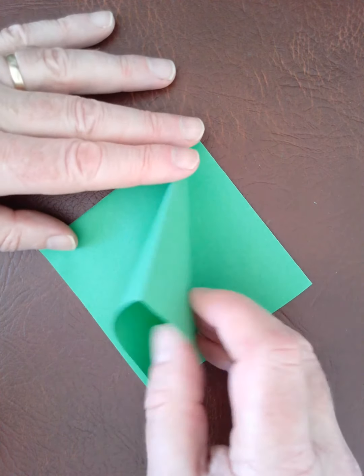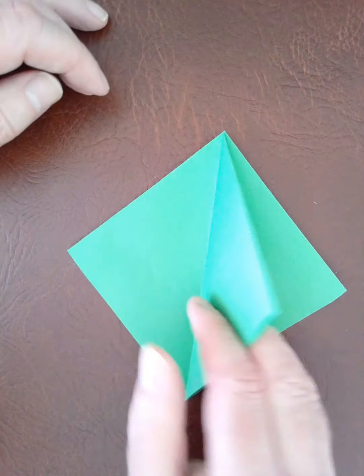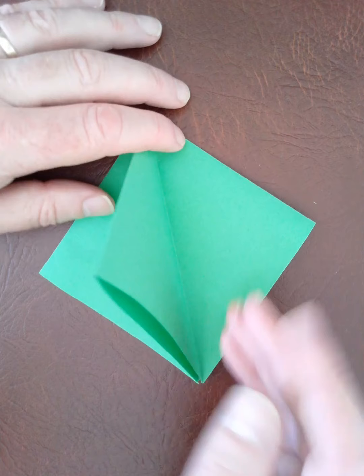So there are four flaps on this square, one, two, three, four and everything else that we're going to do is going to be times four.